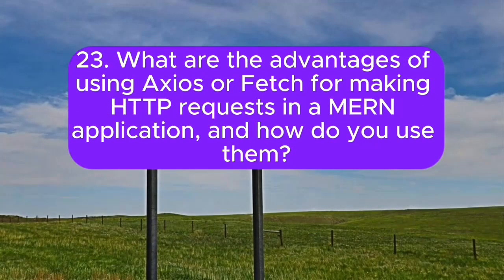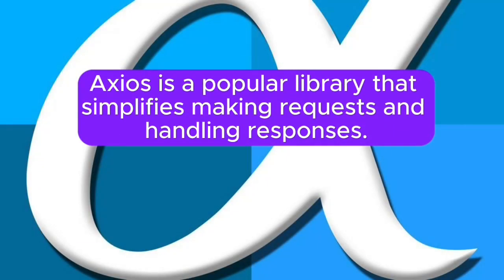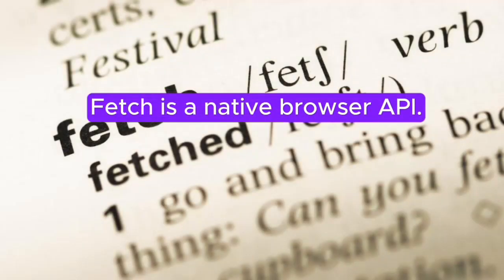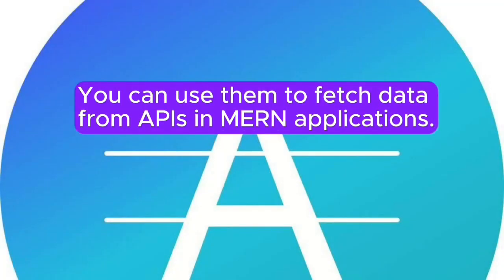23. What are the advantages of using Axios or Fetch for making HTTP requests in a MERN application, and how do you use them? Answer: Axios and Fetch are used for making HTTP requests. Axios is a popular library that simplifies making requests and handling responses. Fetch is a native browser API. You can use them to fetch data from APIs in MERN applications.